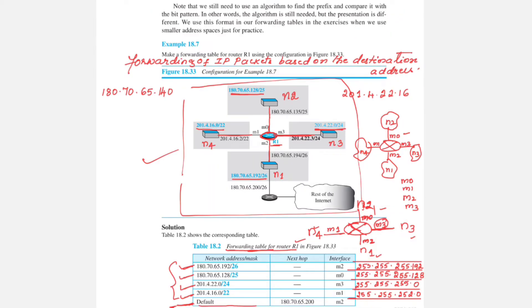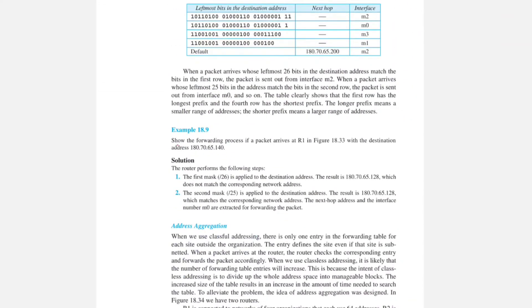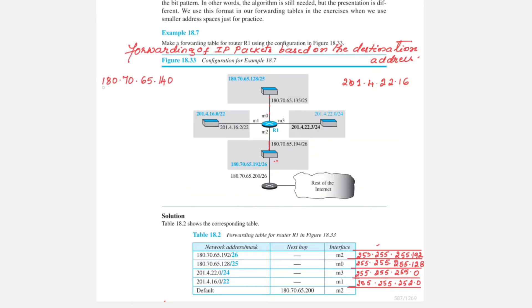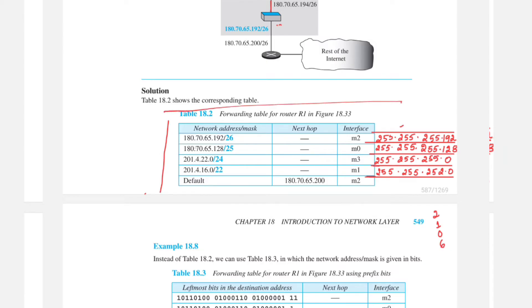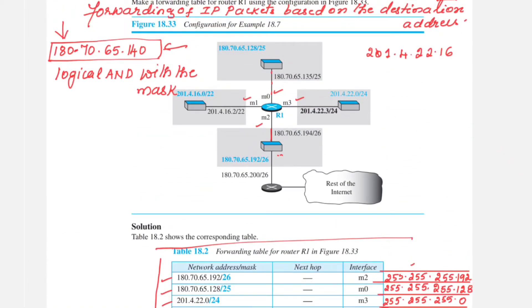The question can be asked like this: show the forwarding process if a packet arrives at R1 with the destination address 180.70.65.140. The router receives this packet and must decide whether to place it on M0, M1, M2, M3, or whether it belongs to the default entry. In the problem statement, the forwarding table and the destination address will be given.